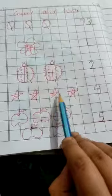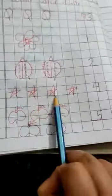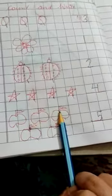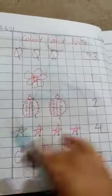1, 2, 3, 4. There are 4 stars. Write down number 4 here. 1, 2, 3, 4, 5. There are 5 apples. Write down number 5 here.